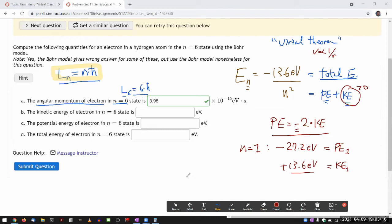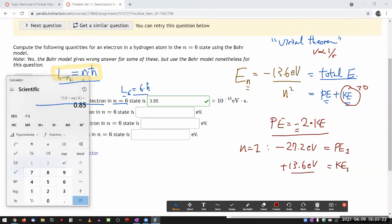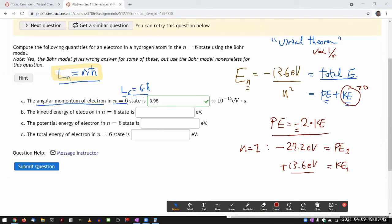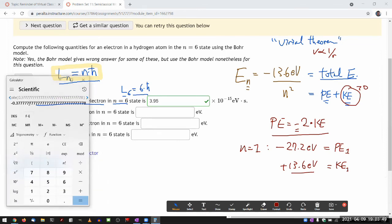That gives the answer rather quickly. I can work out the total energy for n equals six state, that's going to be 13.6 divided by 6 squared. For the total energy, that would have minus sign, so minus 0.378 eV. When I'm talking about kinetic energy, that is just going to be the positive version of that, plus 0.378.